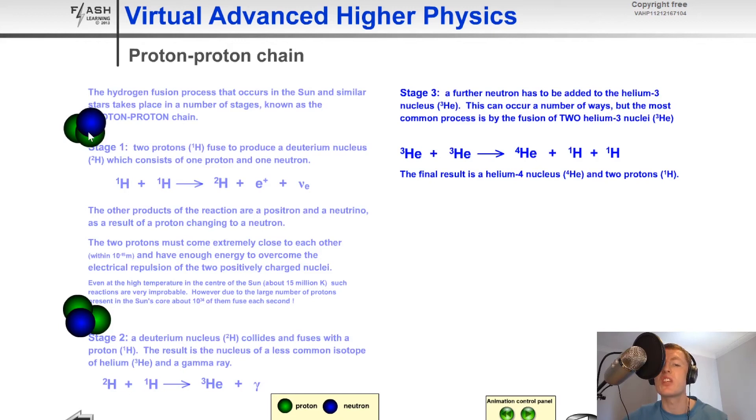So lastly, to visualize stage three, we've got our helium-3 and our helium-3, and if we play this, the two fuse together to form helium-4 and two protons.